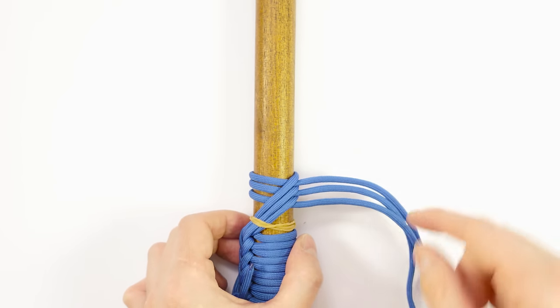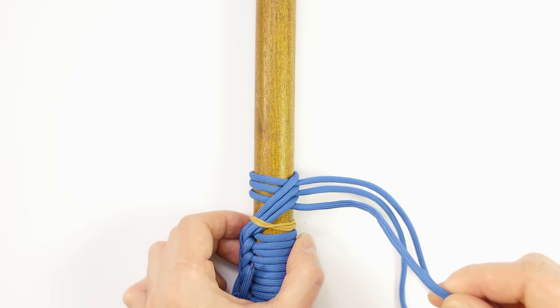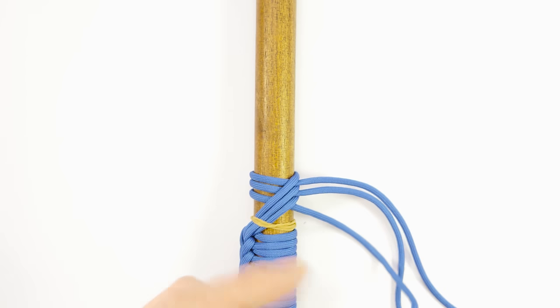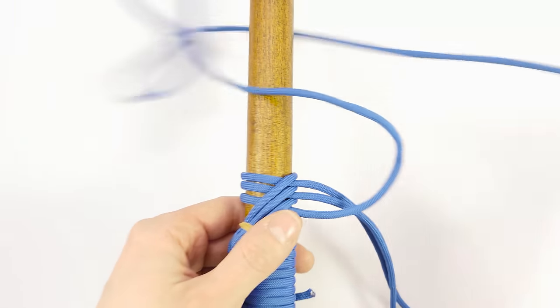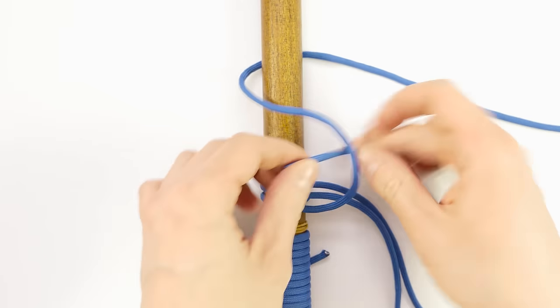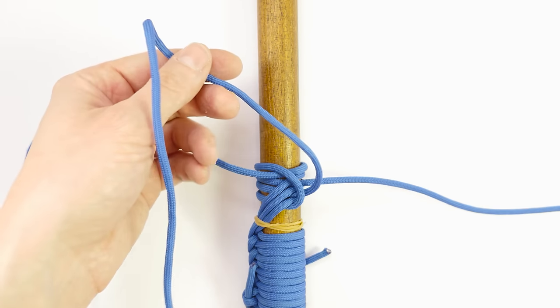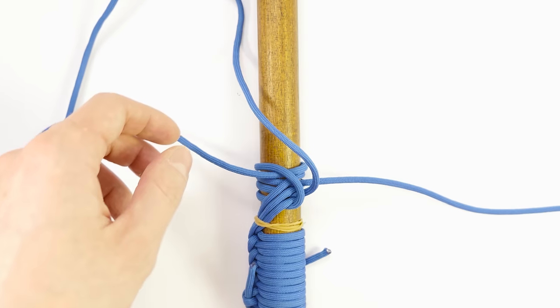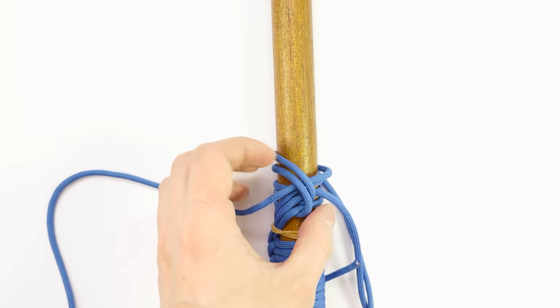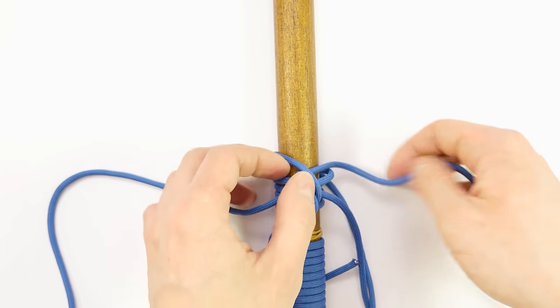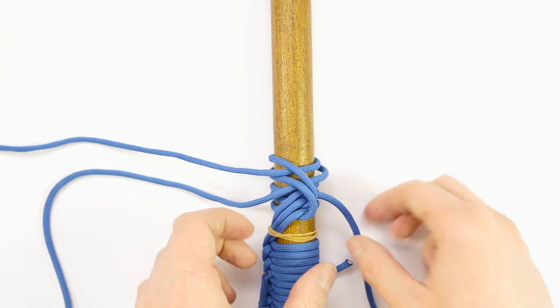Then reverse direction, starting with the bottom cord, and travel towards the left side and make a hitch. The next cord, again towards the right side, and the third cord.